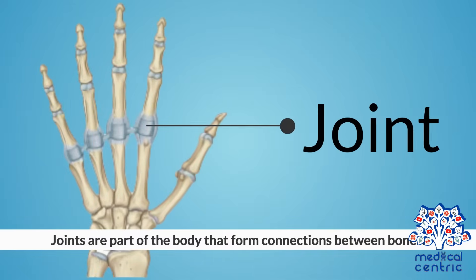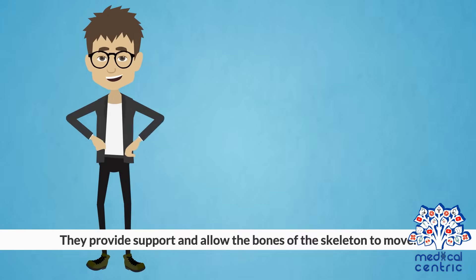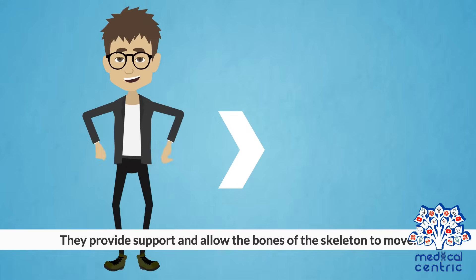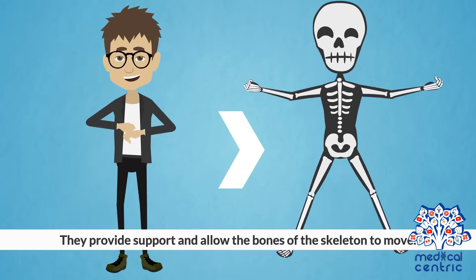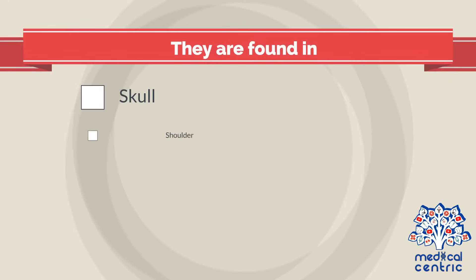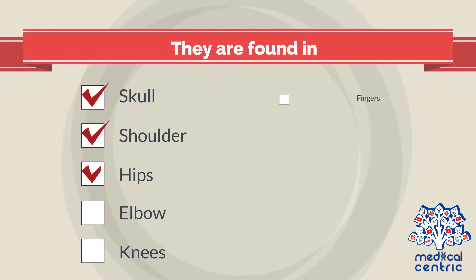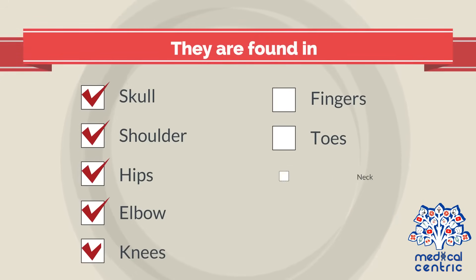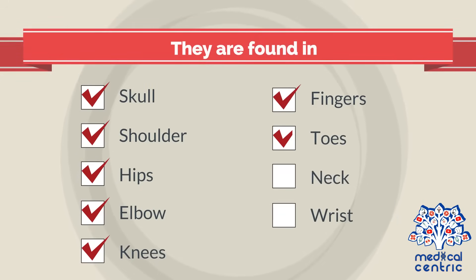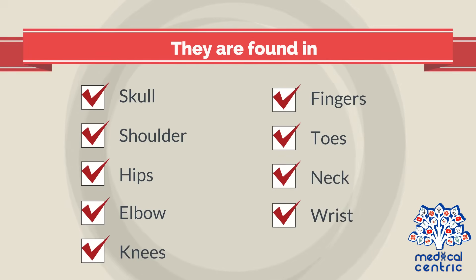Joints are part of the body that form connections between bones. They provide support and allow the bones of the skeleton to move. They are found in the skull, shoulder, hips, elbow, knees, fingers, toes, neck, and wrist.